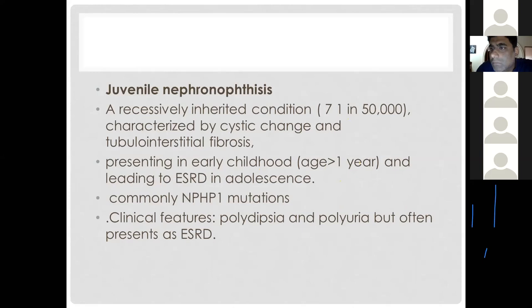Juvenile nephronophthisis is an autosomal recessively inherited condition with an incidence of about 7 in 50,000 births. It is characterized by cystic changes and tubulointerstitial fibrosis. It usually presents in early childhood with polydipsia and polyuria, and children often have a history of prolonged bedwetting. It can cause end-stage renal disease by adolescence, and is associated with a mutation in the NPHP1 gene.